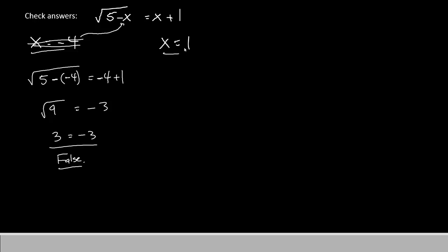Now, let's try the other x and see if it gives us a correct statement. We'll plug the 1 in, where we see x, here and here. We'll have 5 minus 1 equals 1 plus 1. 5 minus 1 is root 4. 1 plus 1 is 2. If we operate the square root, we'll end up with 2 equals 2. That's a true statement.